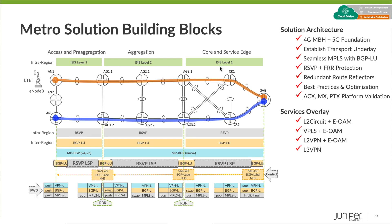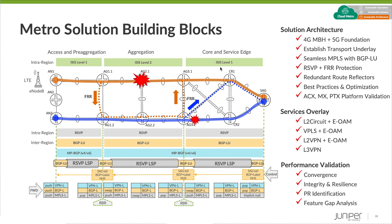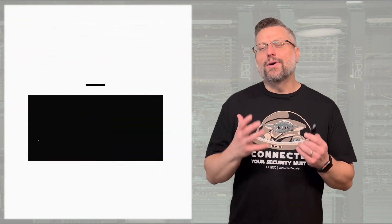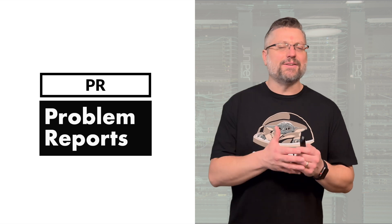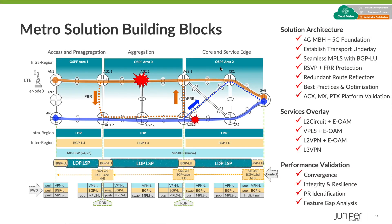Layer 2 services are further enhanced with Ethernet OAM. Now that the topology is built, we execute the test plan. Every JVD includes a detailed test plan with up to 300 test cases — shown here is a drastic simplification, but we analyze all the different failure scenarios and measure how the network responds. We're looking at convergence and resiliency, validating that the devices are capable of supporting the given solution. Along the way we're opening PRs and identifying any feature gaps.